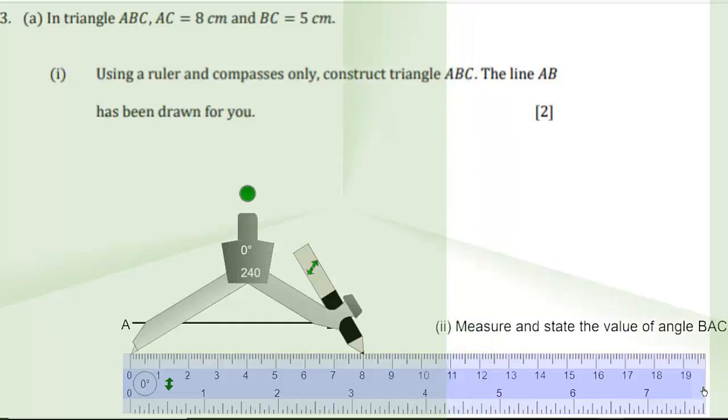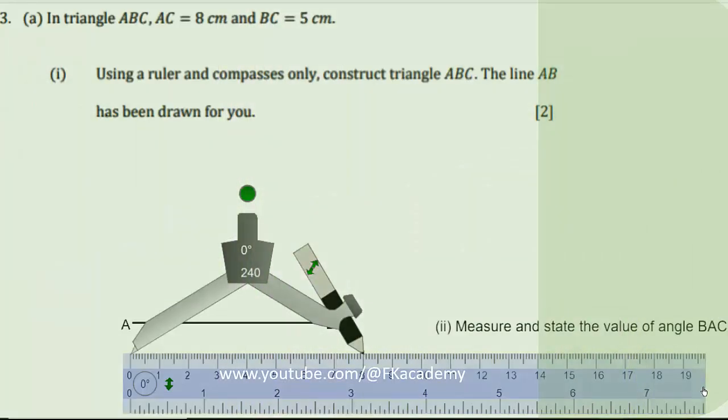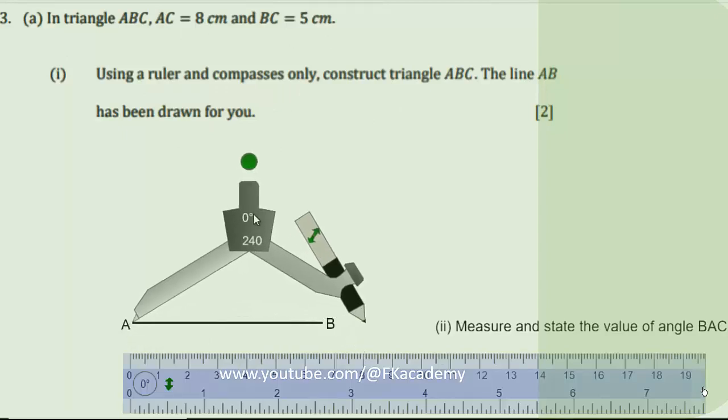The line AB has been drawn for you. We can see line AB. To construct triangle ABC, the line segment AC must be 8 centimeters. So we measure with a compass 8 centimeters, as we are seeing on the screen.